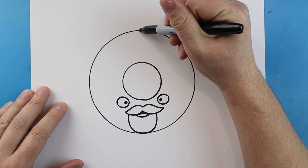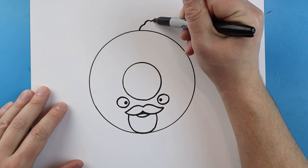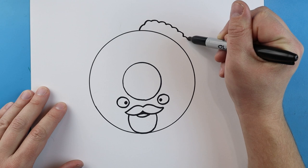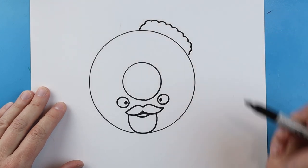I'm going to start right up here and I'm going to make a bumpy little line that's going to go up. It's going to come over and down.